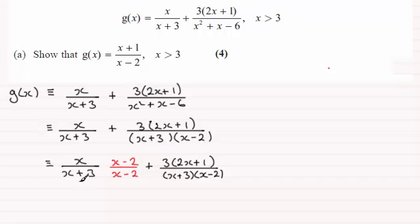And so I can see here now that the lowest common multiple for the bottom is going to be x plus 3 then times x minus 2. And so for this first fraction here the denominator was multiplied by x minus 2 and you can see I need to multiply the numerator with x minus 2.